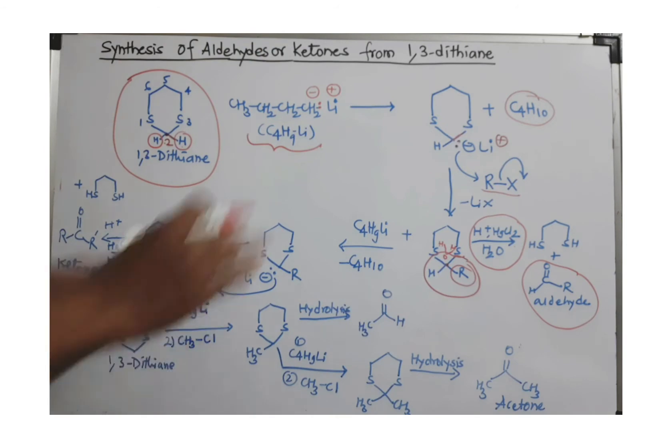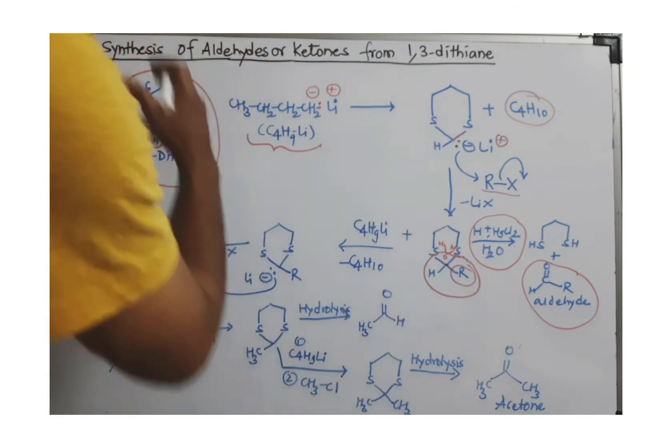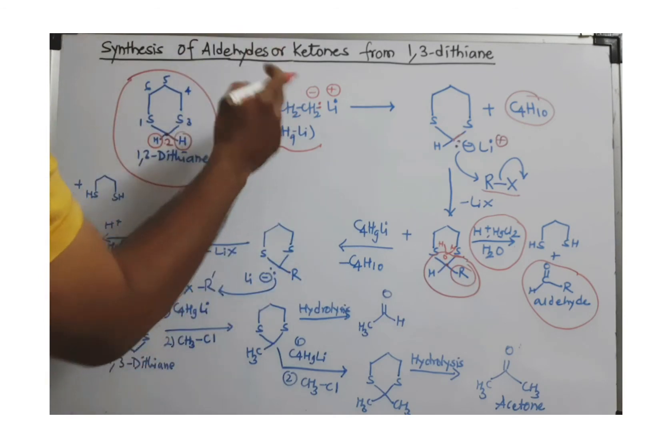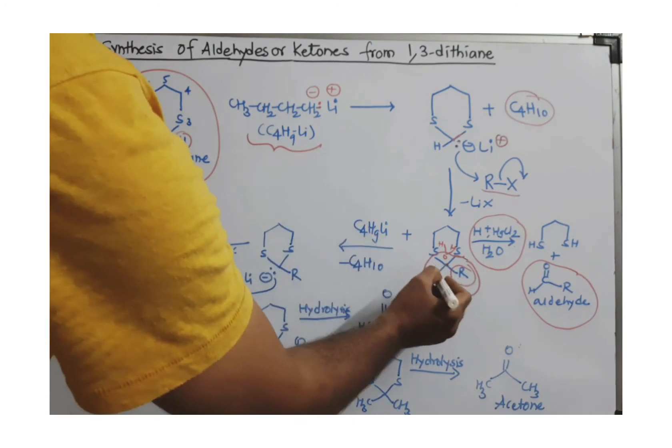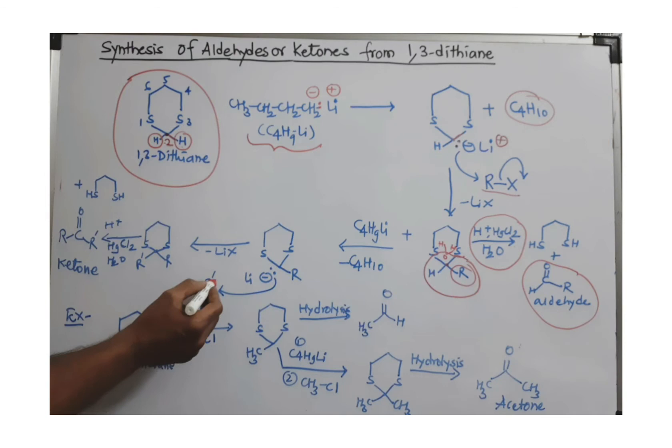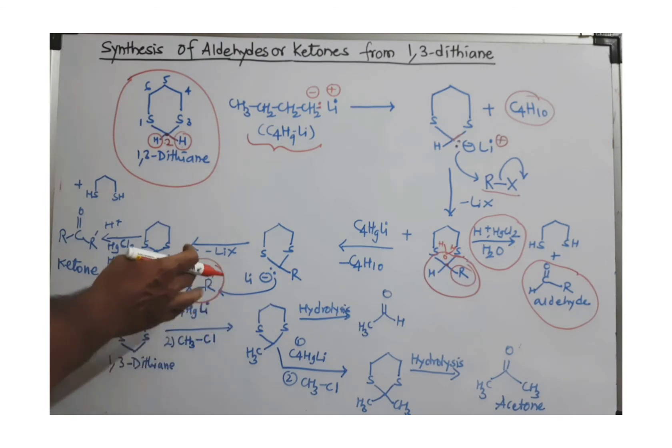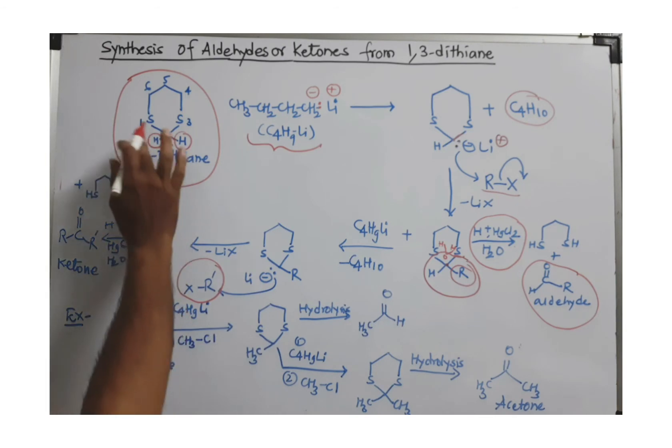Now if you want to introduce one more alkyl group, you can repeat those steps. Use again another molecule of n-butyl lithium to remove this hydrogen to get this carbanion again. Whatever alkyl group you want to introduce, then this alkyl group again attacks in an SN2-type reaction.